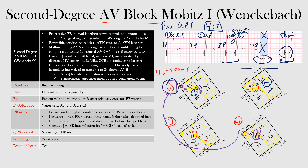Clinically speaking, Mobitz type 1 is often benign with little to no hemodynamic instability. It has a low risk of progressing to third-degree or complete heart block. Asymptomatic patients do not typically require treatment. If it is a consequence of Lyme disease, treating the Lyme disease often resolves the block. Symptomatic patients may benefit from atropine but rarely require permanent pacing. In contrast, Mobitz type 2 has a greater risk of progressing to complete heart block and more often requires permanent pacing.